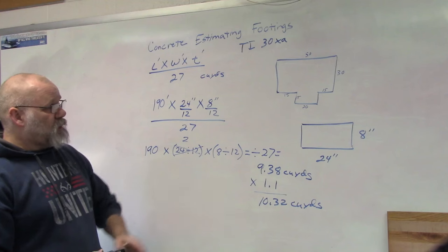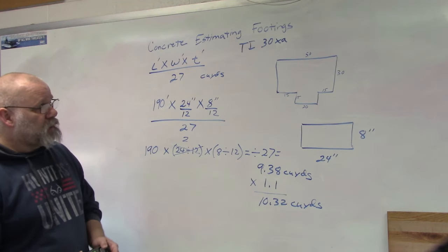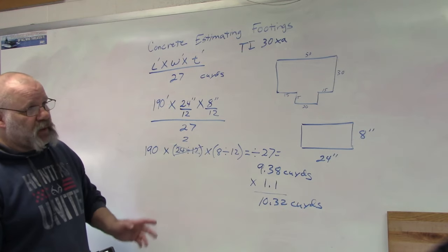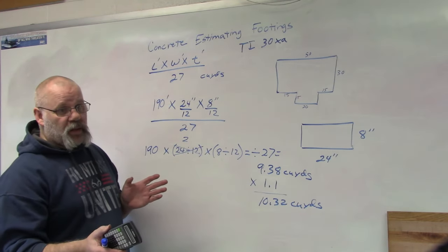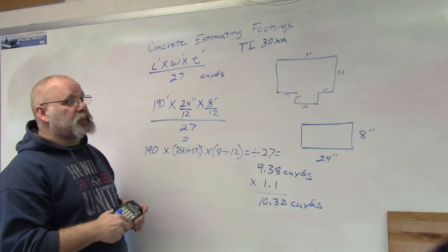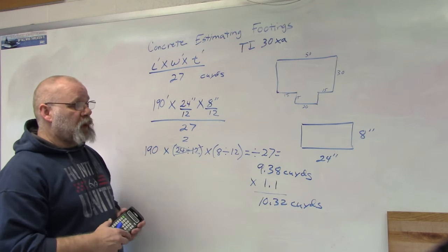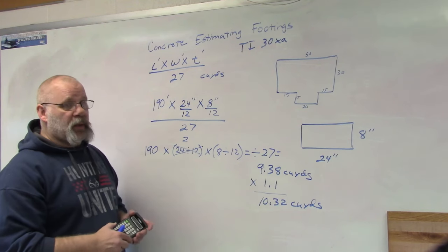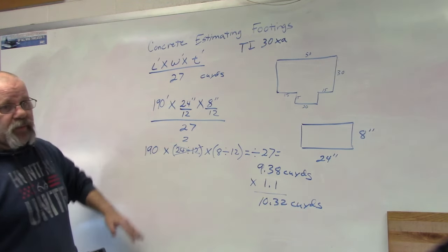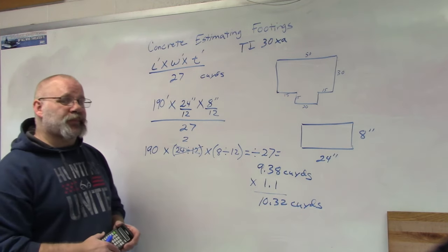So that's a basic footing, one footing. Again, if you have multiple types of footings, then you'd have to do these calculations again. Find out how long that section of footings are, how wide they are, how deep they are. So you might have multiple—you can use the same equation, you just have to do it multiple times with the different numbers.